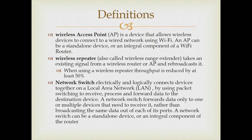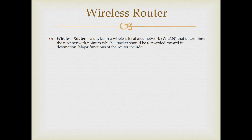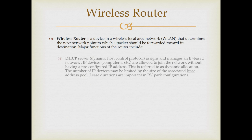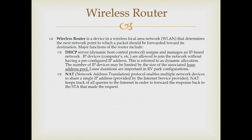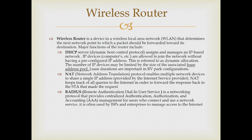A network switch logically connects devices together on a LAN. A wireless router determines the next network point to which a packet should be forwarded towards its destination. Major functions for the router include acting as a dynamic host control server. DHCP servers are where IP addresses are assigned by the router — this is referred to as dynamic allocation. The number of IP addresses is frequently limited by the size of the associated lease address pool. Wireless routers also frequently support network address translation (NAT), radius functions for authentication, and firewall functionality.